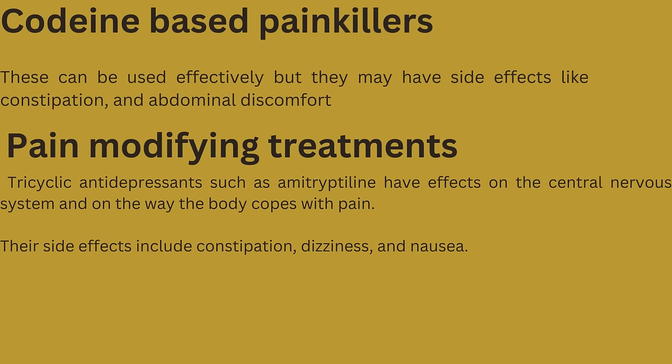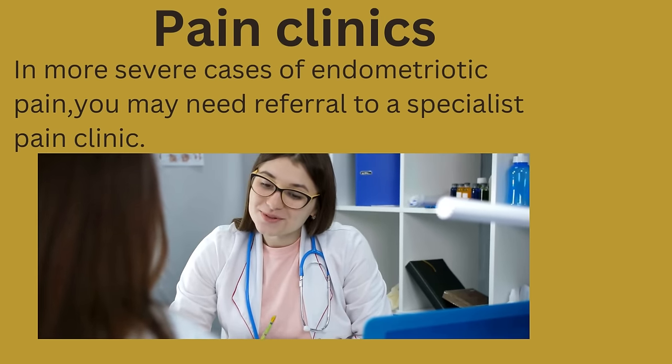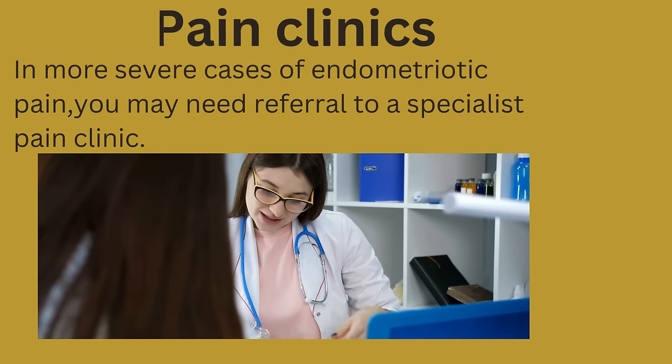Codeine-based painkillers can also be used effectively, but may have side effects like constipation and abdominal discomfort. There are also pain-modifying treatments like tricyclic antidepressants such as amitriptyline, which have effects on the central nervous system and on the way the body copes with pain; side effects include constipation, dizziness, and nausea. In more severe cases of endometriotic pain, you may need a referral to a specialist pain clinic.